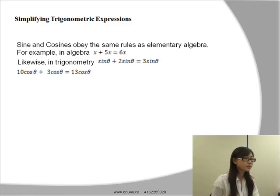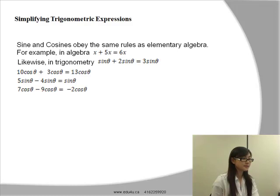So let's try some simple practice. 10 cos θ plus 3 cos θ will be equal to 13 cos θ because 10 plus 3 is equal to 13. Simple enough. 5 sine θ minus 4 sine θ equals sine θ. And 7 cos minus 9 cos equals negative 2 cos θ.